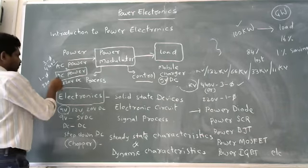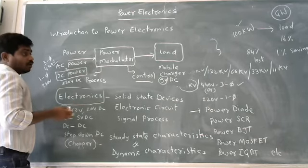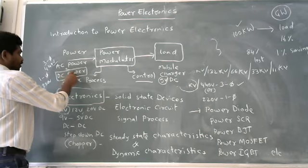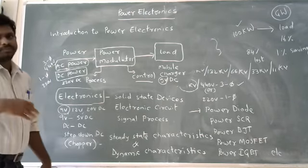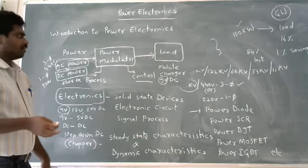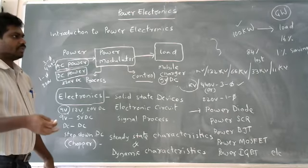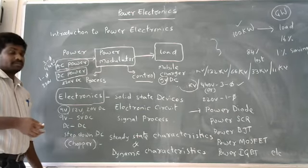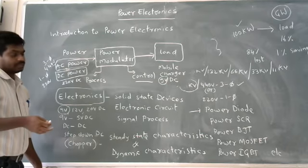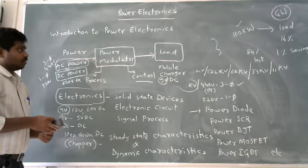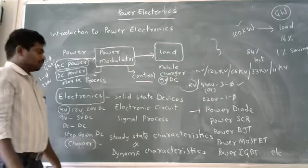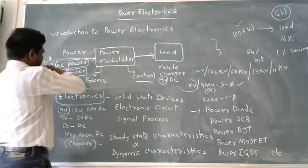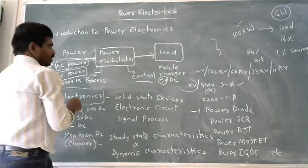When we are not having any DC power and we have only AC power, there also there must be two conversions that take place. Thereby we are going to use different power electronic configurations to charge the mobile.